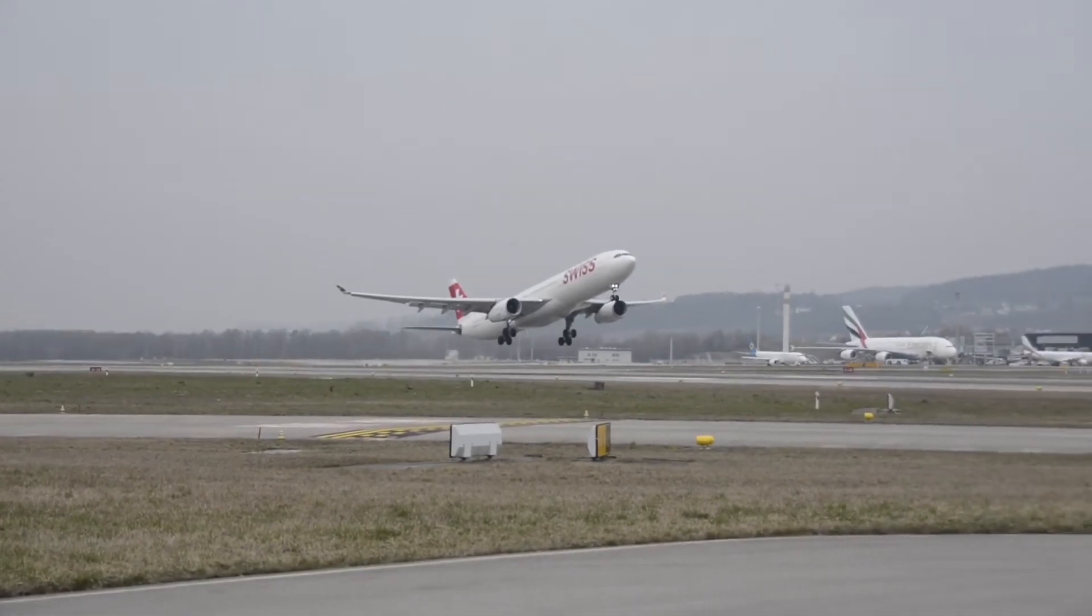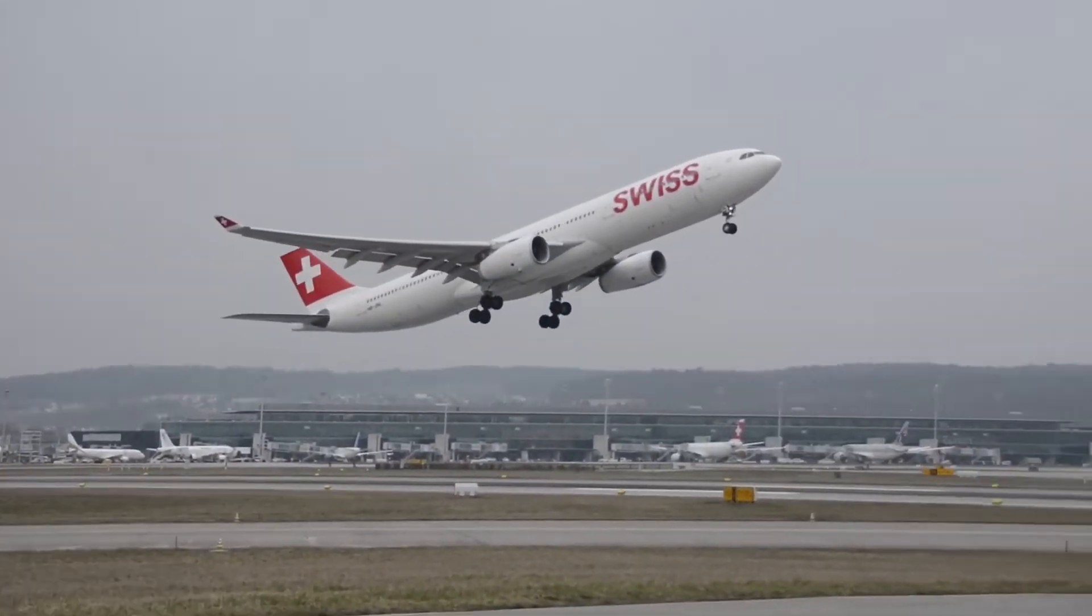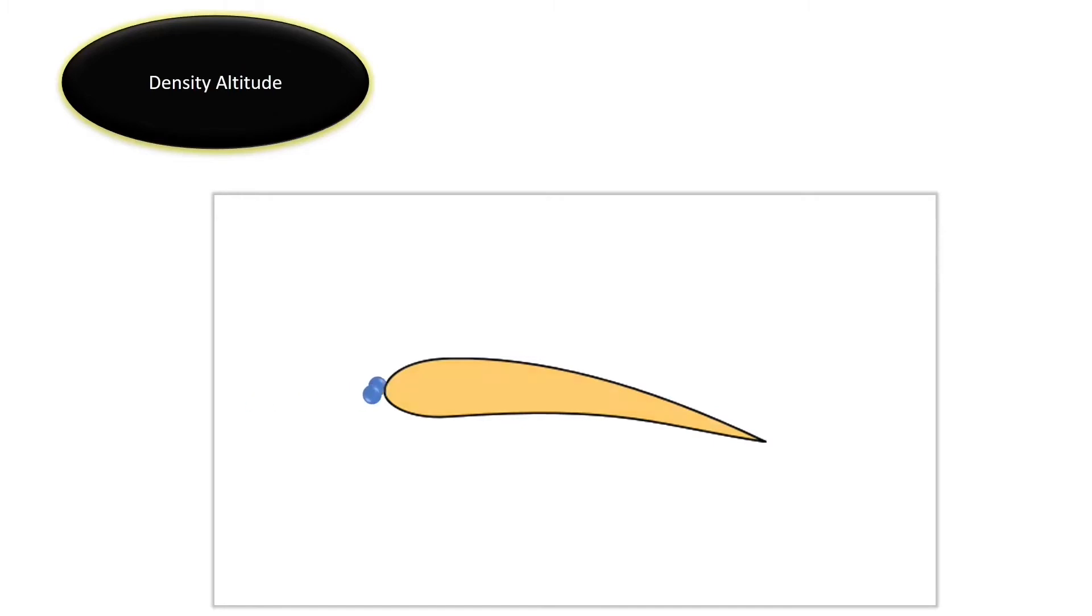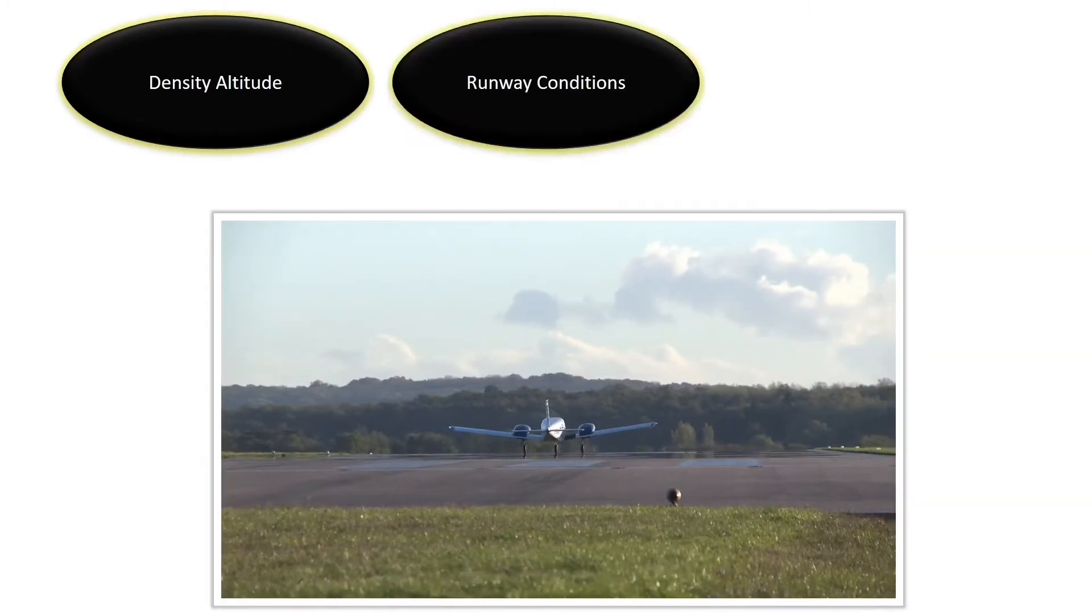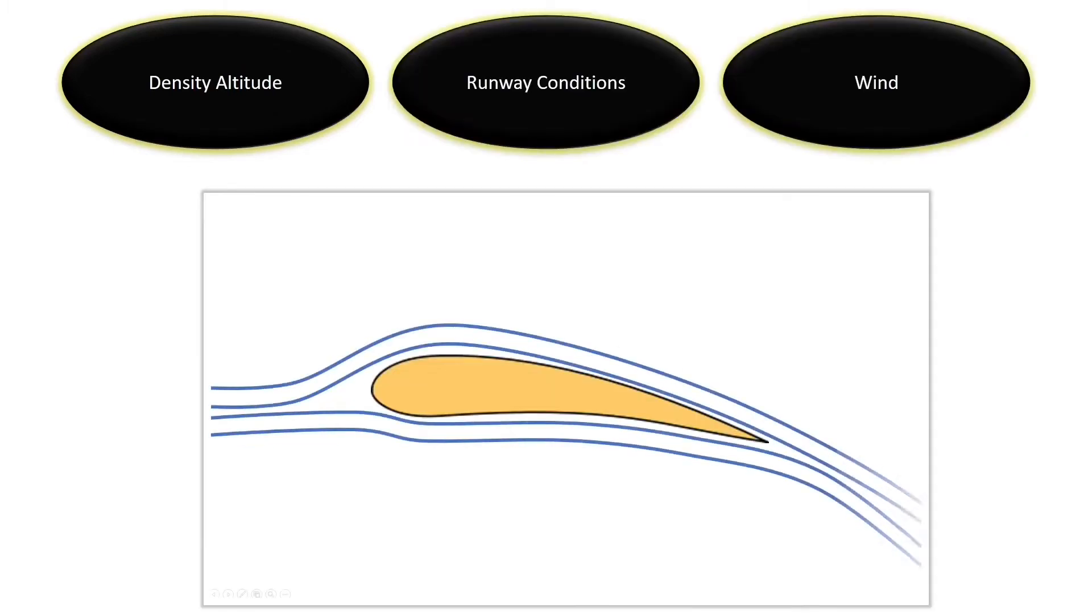However, an aircraft can fail to takeoff below maximum takeoff weight. Pilots should consider density altitude, that is, the density of air particles travelling over the wing necessary to produce lift, runway conditions and wind. Headwind creates more lift while tailwind opposes the lift.